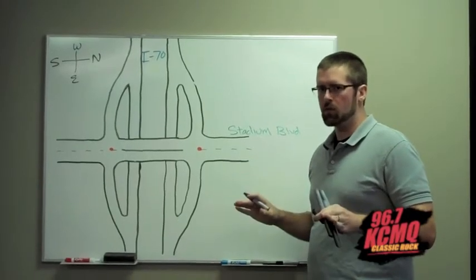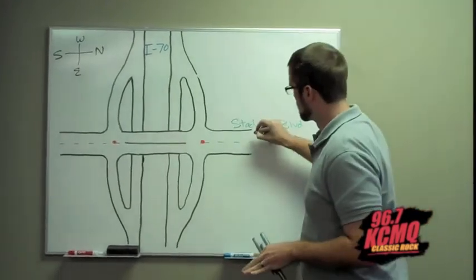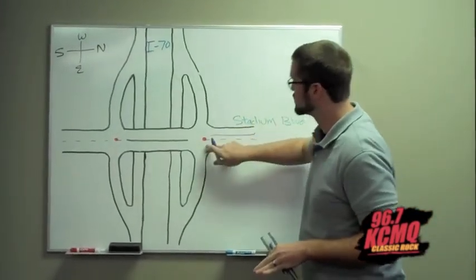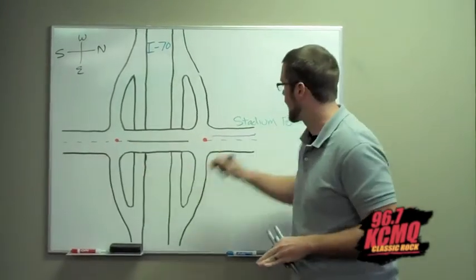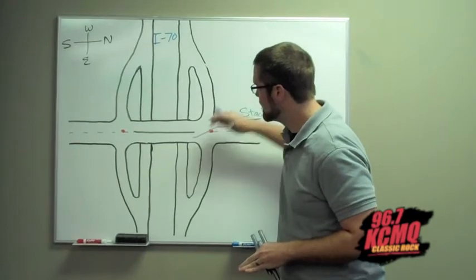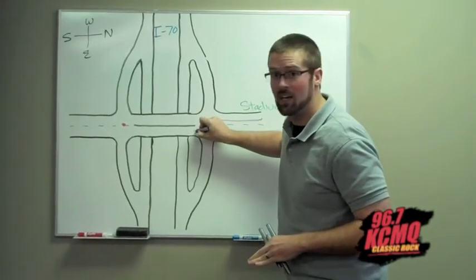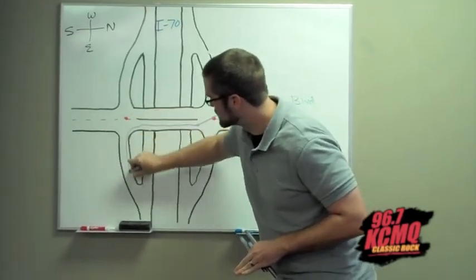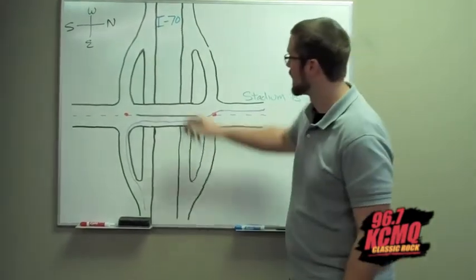So if you're traveling south on Stadium, you'll start here, go up to the traffic light indicated by the red dot, wait for your turn on the light, cross over the lane, go across the bridge and you'll be able to dump right onto 70 real quick from there.